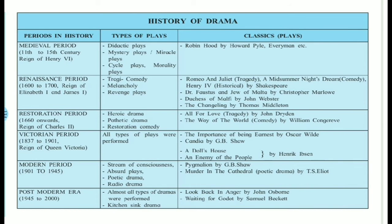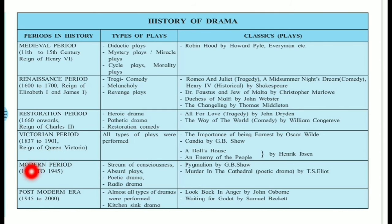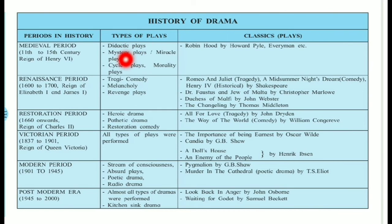There are six important periods in the history of English drama: Medieval, Renaissance, Restoration, Victorian, Modern, and Postmodern. The Medieval period runs from the 11th to the 15th century during the reign of Henry VI. Types of plays include didactic plays, mystery plays, miracle plays, cycle plays, and morality plays. Classic plays of this period are Robin Hood by Howard Pyle and Everyman, whose writer is anonymous. The Renaissance period spans 1600 to 1700 during the reign of Elizabeth I and James I.